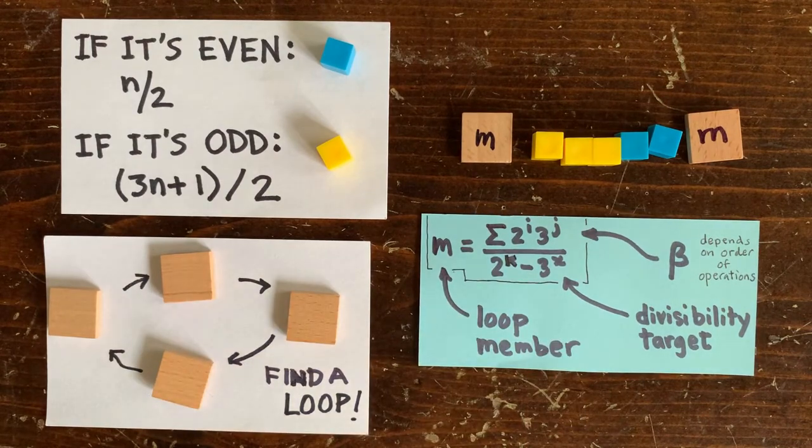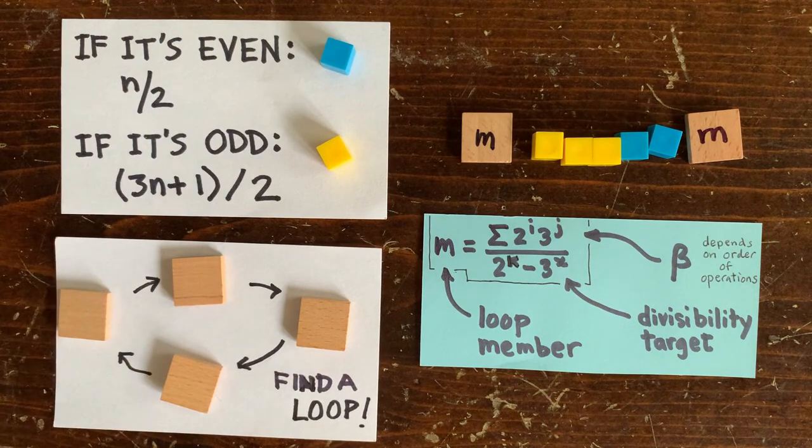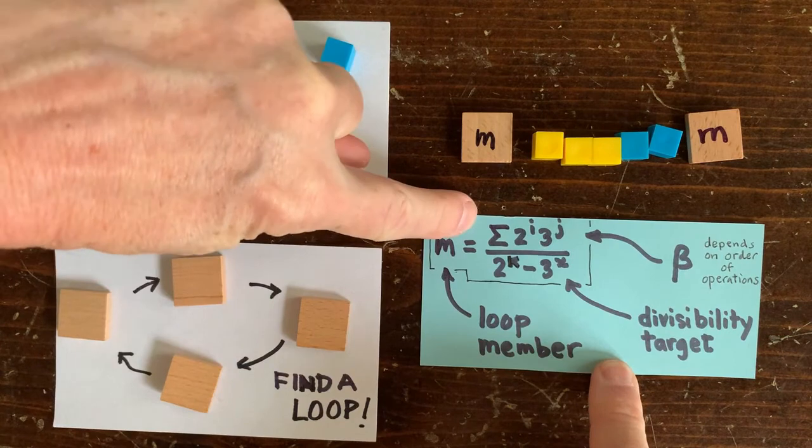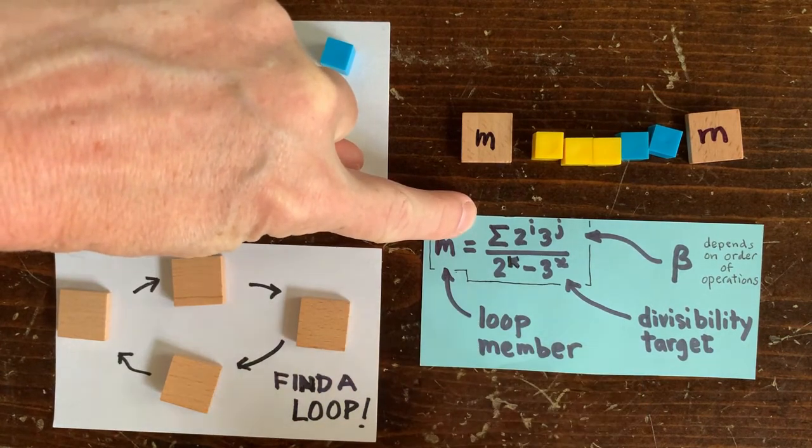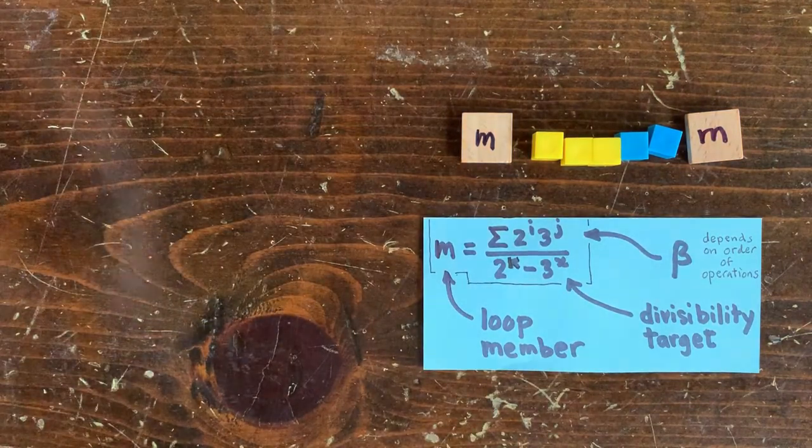So if m is an integer, then we've got a nice 3n plus 1 loop. And here's the formula for m. It has two parts. There's this gnarly numerator, which depends on the order of the operations. But the more important part is the denominator, which only depends on the length of the loop, k,